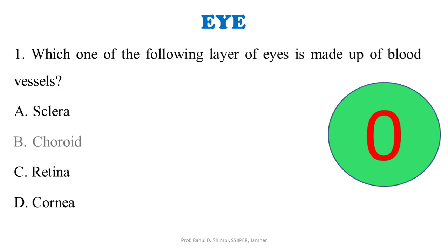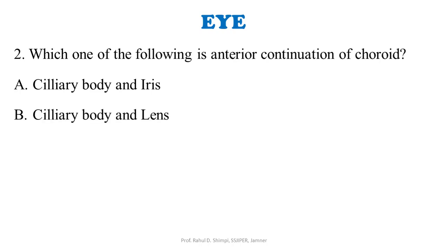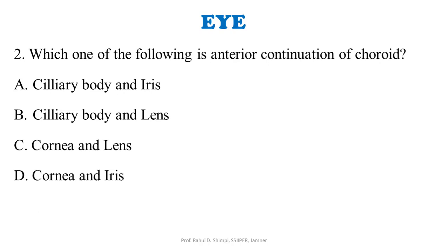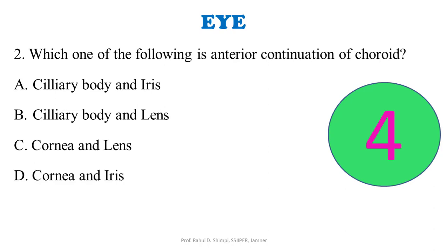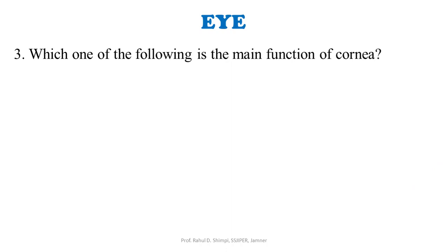Next question: which one of the following is the anterior continuation of the choroid? A: ciliary body and iris. B: ciliary body and lens. C: cornea and lens. D: cornea and iris. The answer is ciliary body and iris.